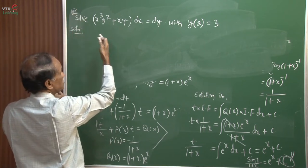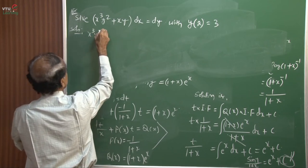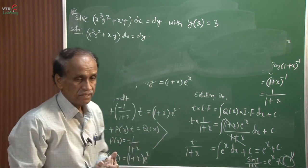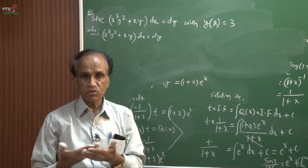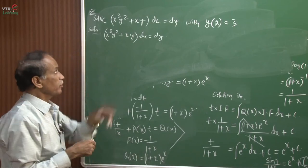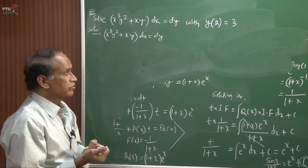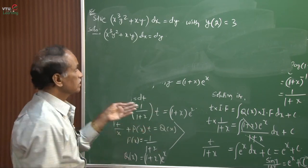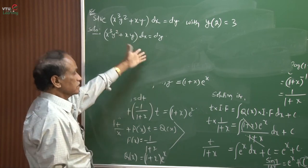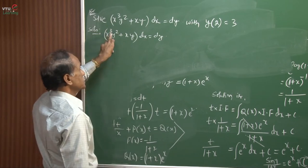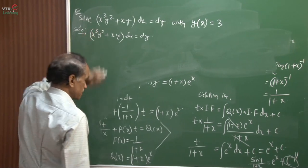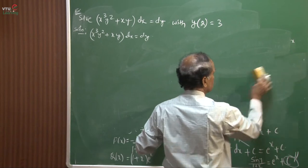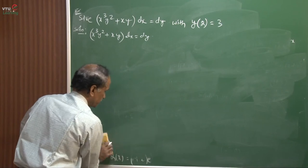The problem is given as x³y² + xy multiplied by dx = dy. By inspection: separation of variables fails, homogeneous fails, exact fails, and it is not linear because of the y² term (non-linearity with x³y²). The only option is Bernoulli's differential equation.